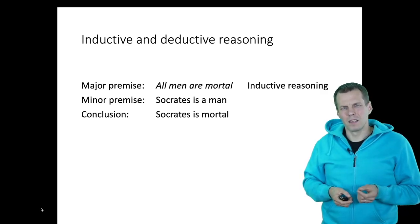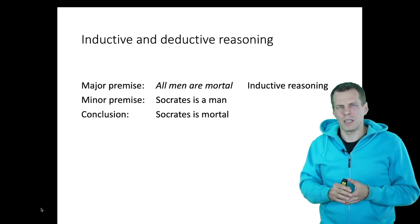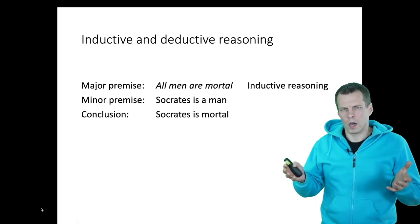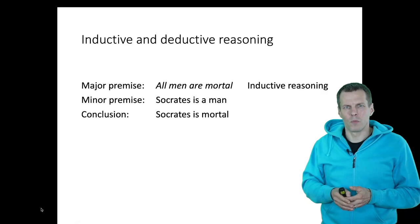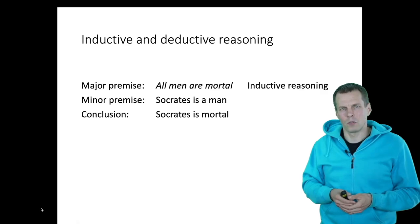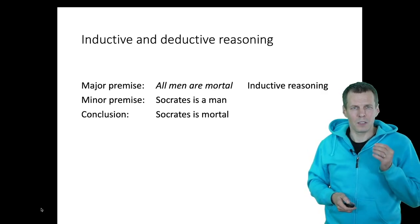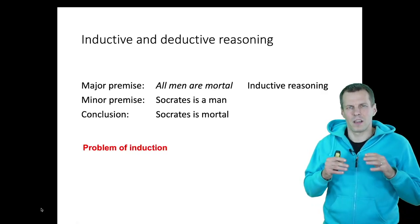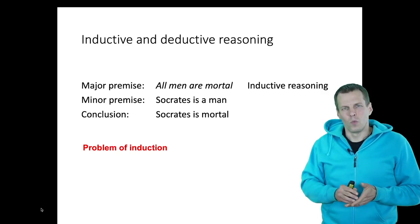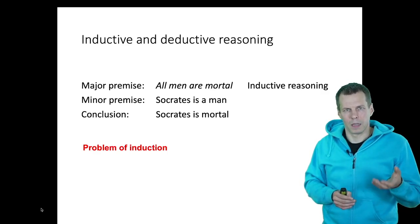This is a bit problematic because we cannot generally prove that all men are mortal — there might be an immortal man we have never seen. The commonly used example is that the fact we have only seen white swans in Europe doesn't mean black swans don't exist; they do exist in Australia. The problem of induction is that whenever we generalize from a smaller number of observations to a general rule, there is always a possibility that somewhere there is an instance where the rule doesn't apply that we simply haven't seen.